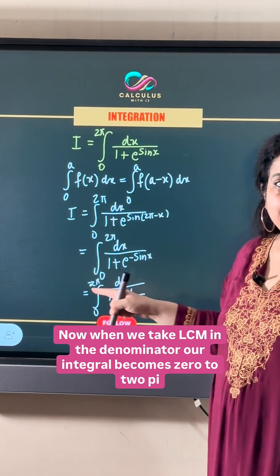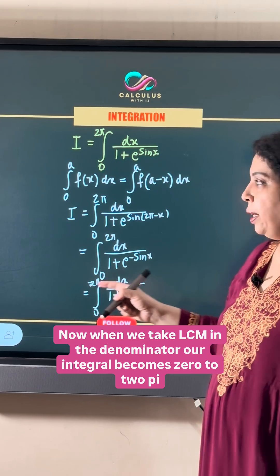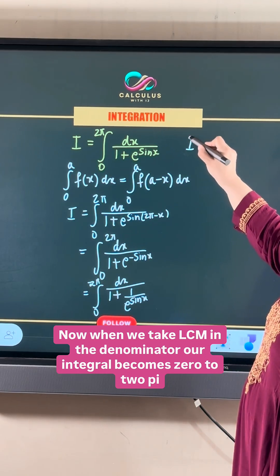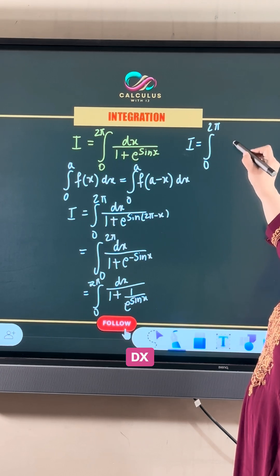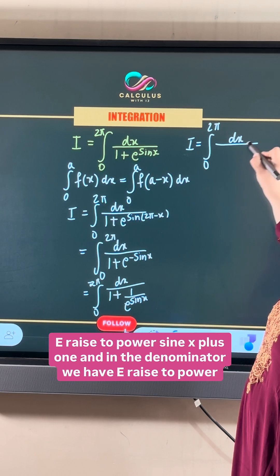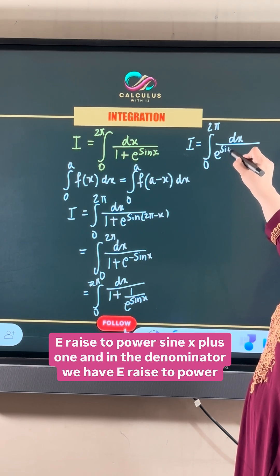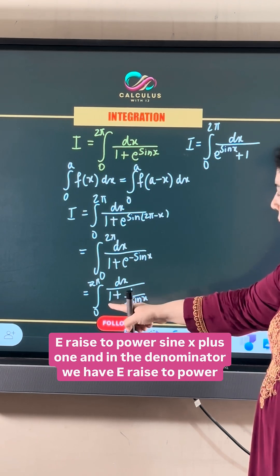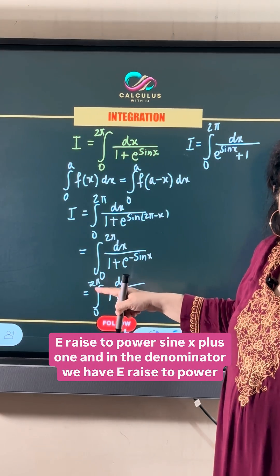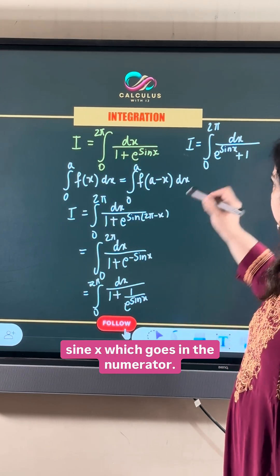Now when we take LCM in the denominator, our integral becomes 0 to 2π dx times e raised to power sin x over e raised to power sin x plus 1.